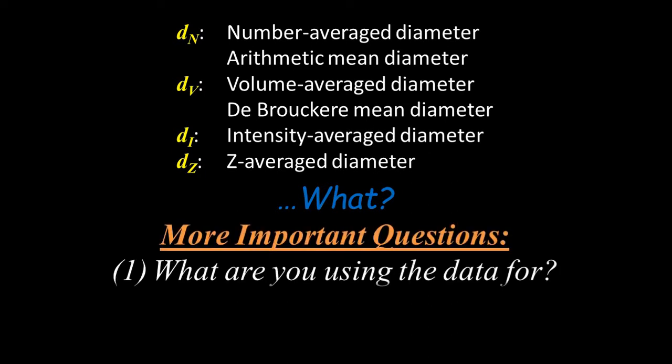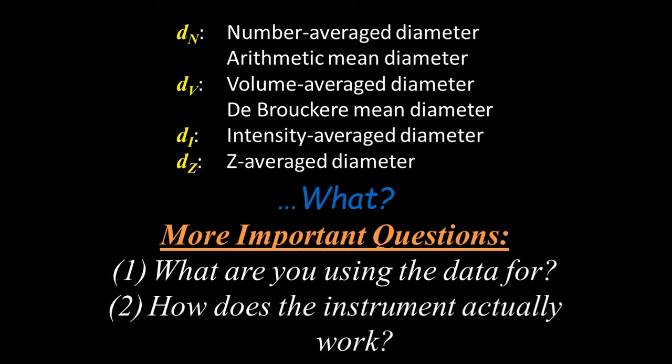The questions that you need to answer first are one, what are you using the data for, and two, how does the instrument actually work to measure or calculate an average, whether it's DLS or a different particle sizing technique. So let's start with the first question and discuss why you need to calculate the average diameter differently depending on your specific application.